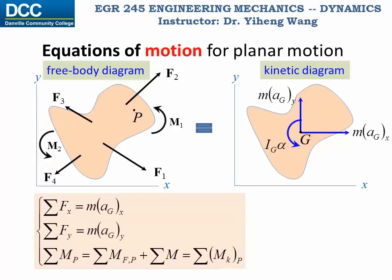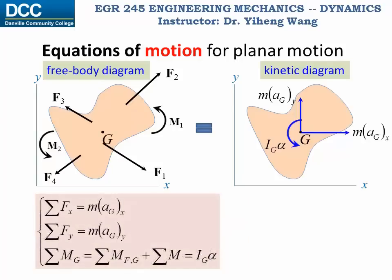Since the resultant moment is calculated about any arbitrary point P, for convenience we can summarize the resultant moment about the gravitational center G. This way, the two inertia force terms ma_Gx and ma_Gy both pass through point G, so they do not create any moment about G. Therefore, the resultant moment about point G simply equals I_G·alpha.